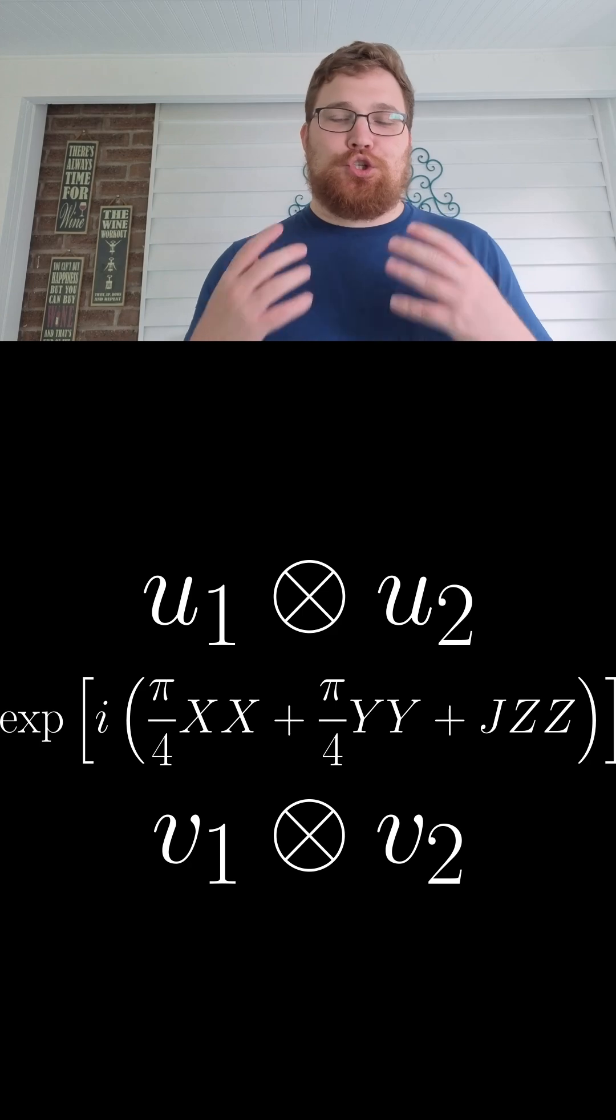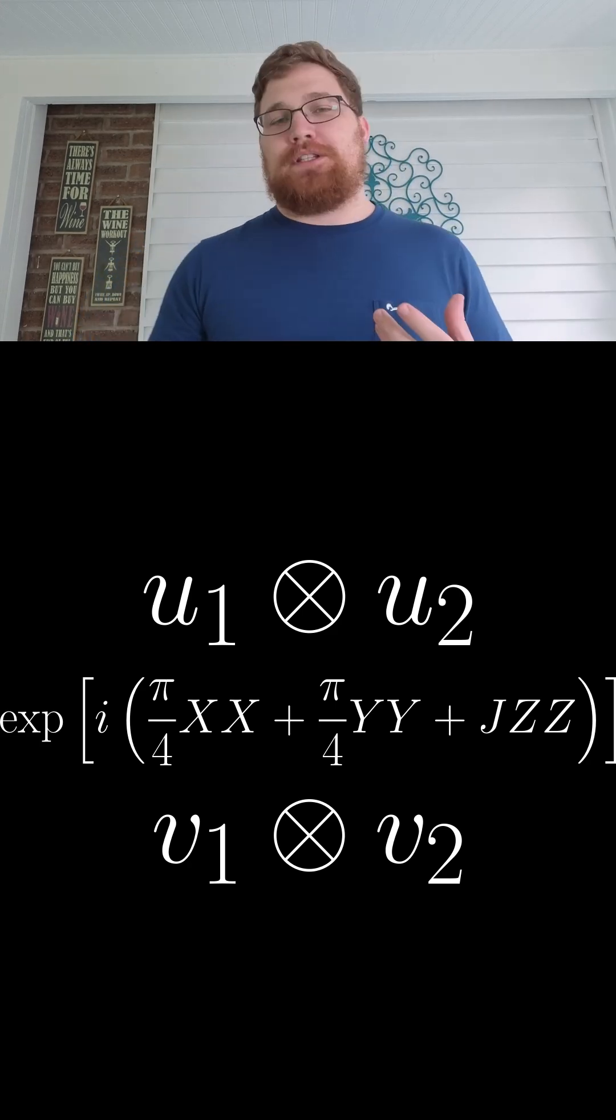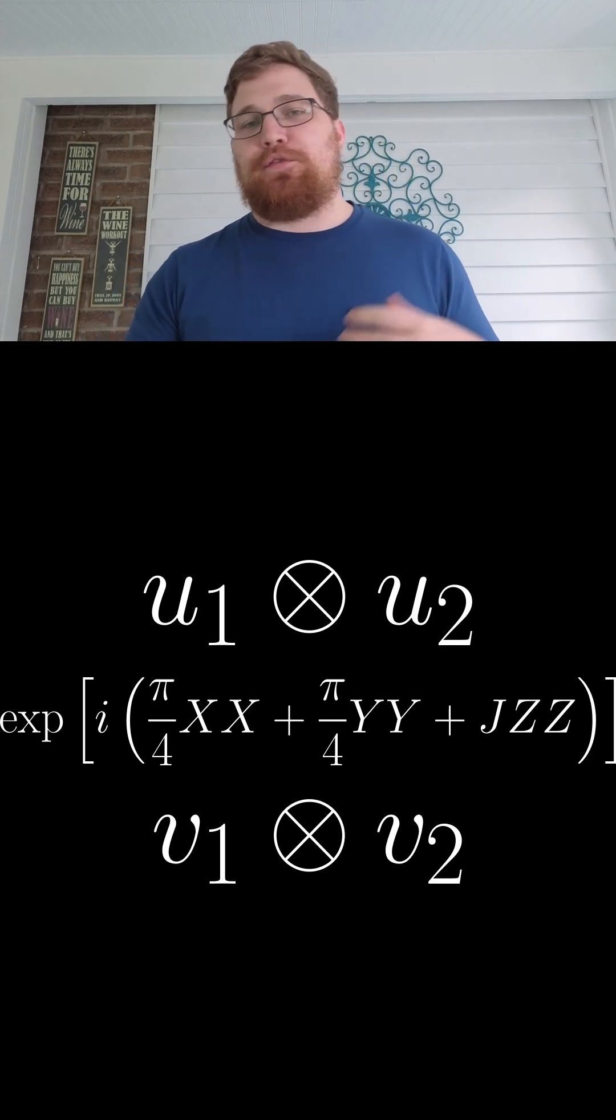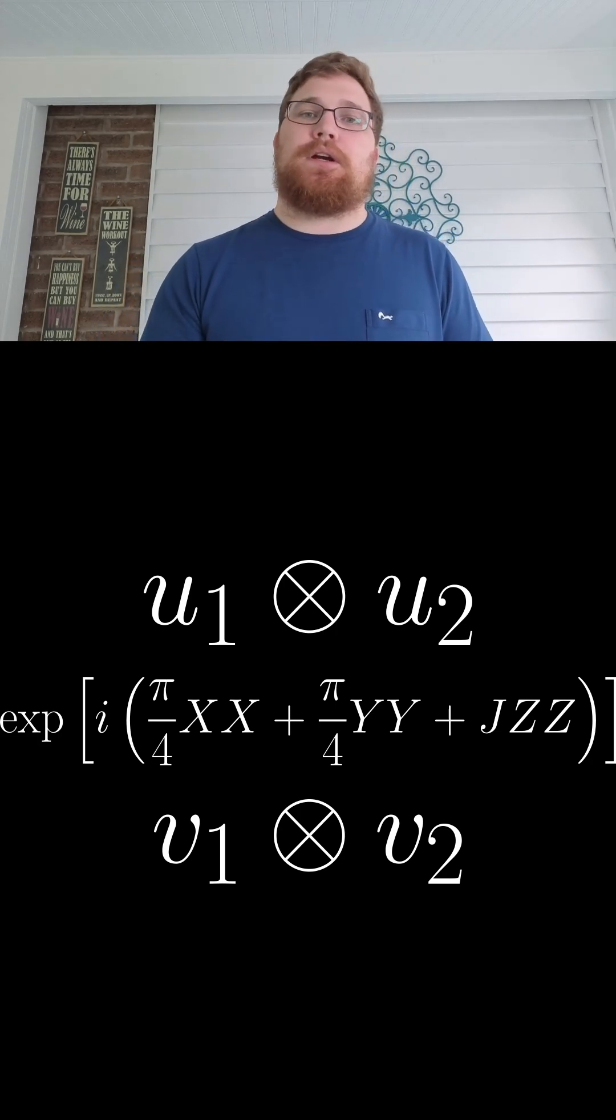So we can do a quick test to show that this is, in fact, unitary in time and in space. For this example, let's just set J equal to 0, and we're going to forget about the single-site unitaries because they are always dual unitary.